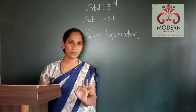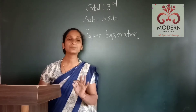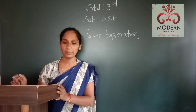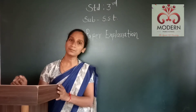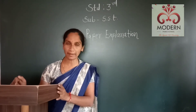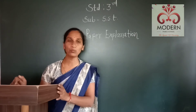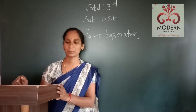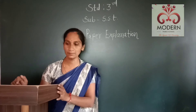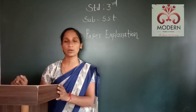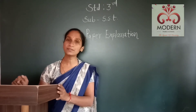So first I will read the question then the options. First: India can be divided into how many natural regions? Option A: 9, Option B: 7, Option C: 6, Option D: 3.